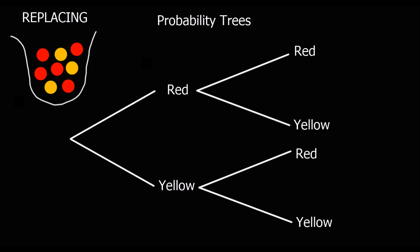Here we've got a probability tree. With a probability tree we've got two events. This is the first event here with the first branch, and then a second event which is represented by a second branch. So this is event one, this is event two.